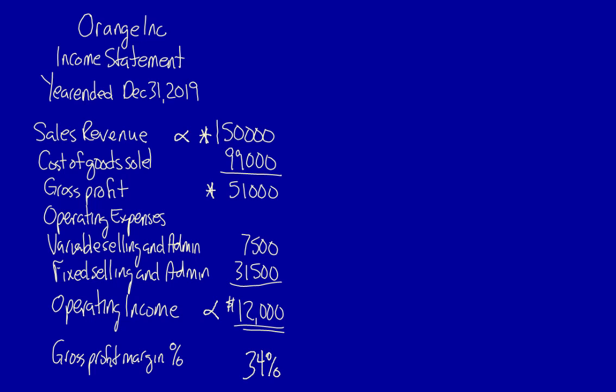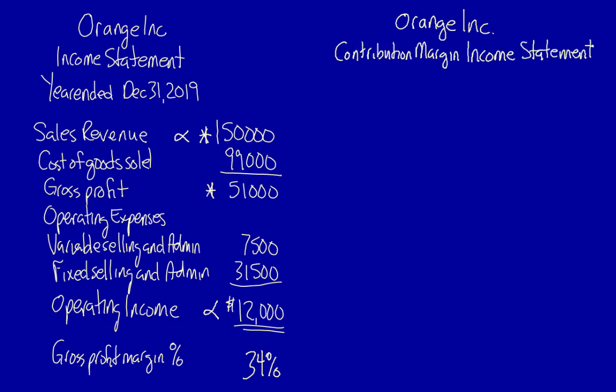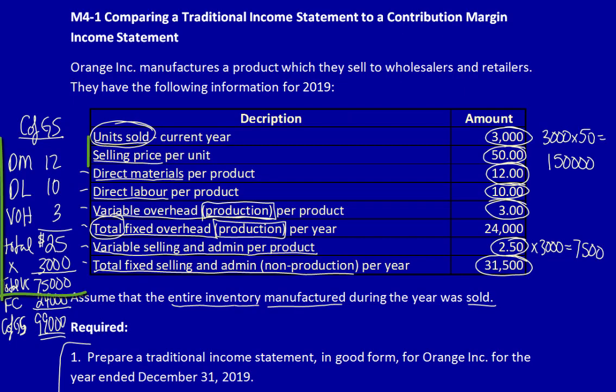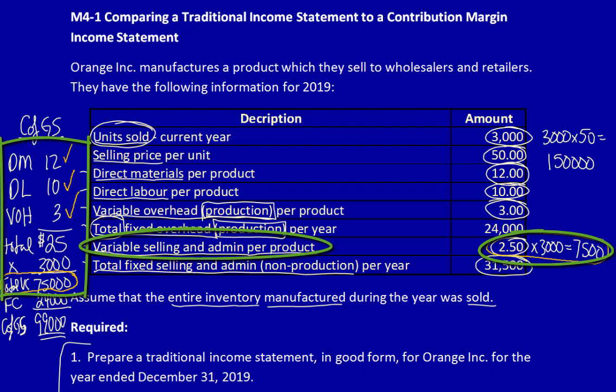Let's now move on to creating the contribution margin income statement. As always we start with the company name, the name of the statement, and then the period of time covered. We start with sales revenue — calculated exactly the same: 3,000 units times $50 is equal to $150,000. Then we list variable costs. There are two variable costs: variable cost production — all the variable costs are direct material, direct labour, variable overhead — the total was $25 times 3,000 units, so total production variable costs are $75,000. In addition we have variable selling and admin costs: $7,500.